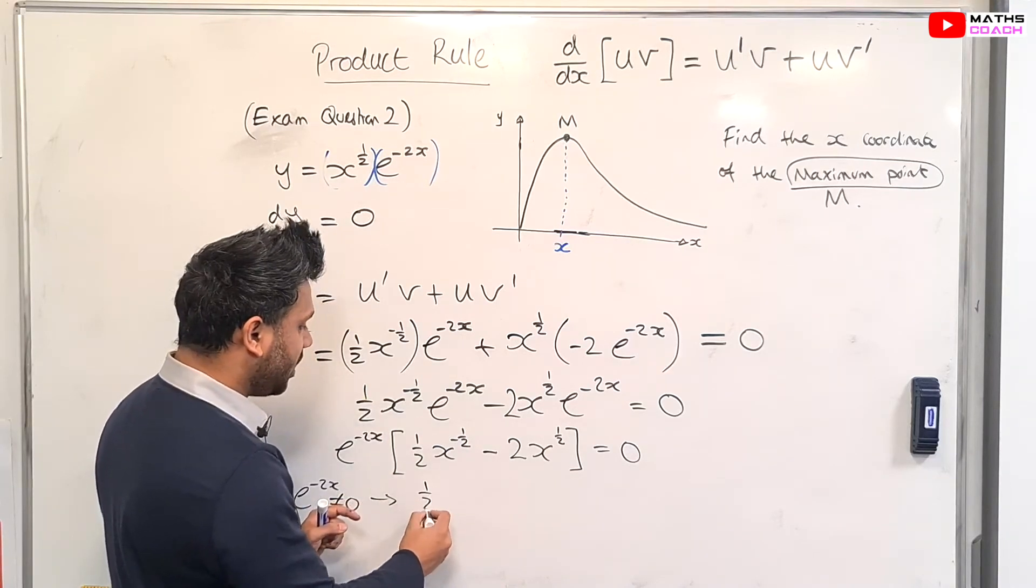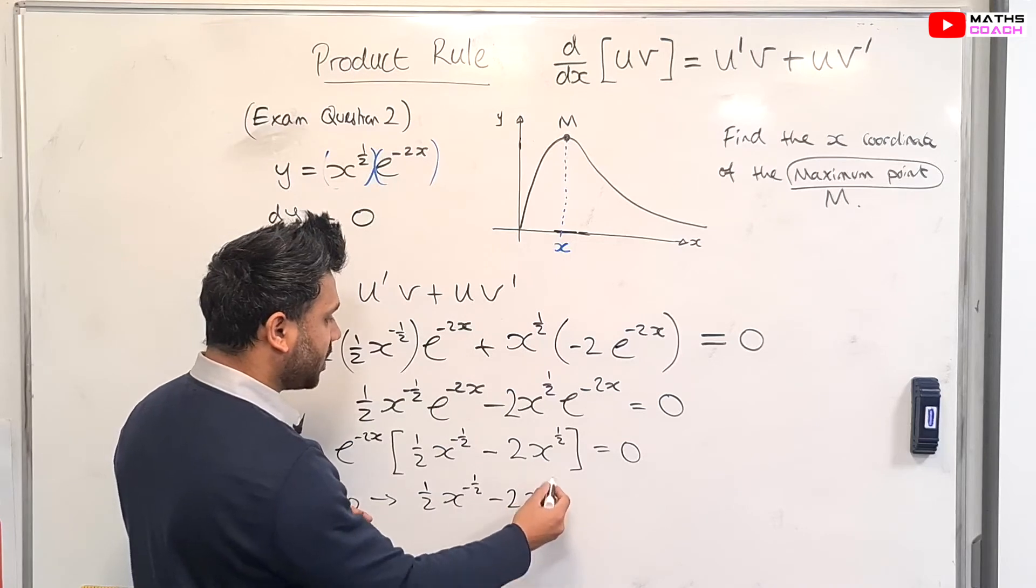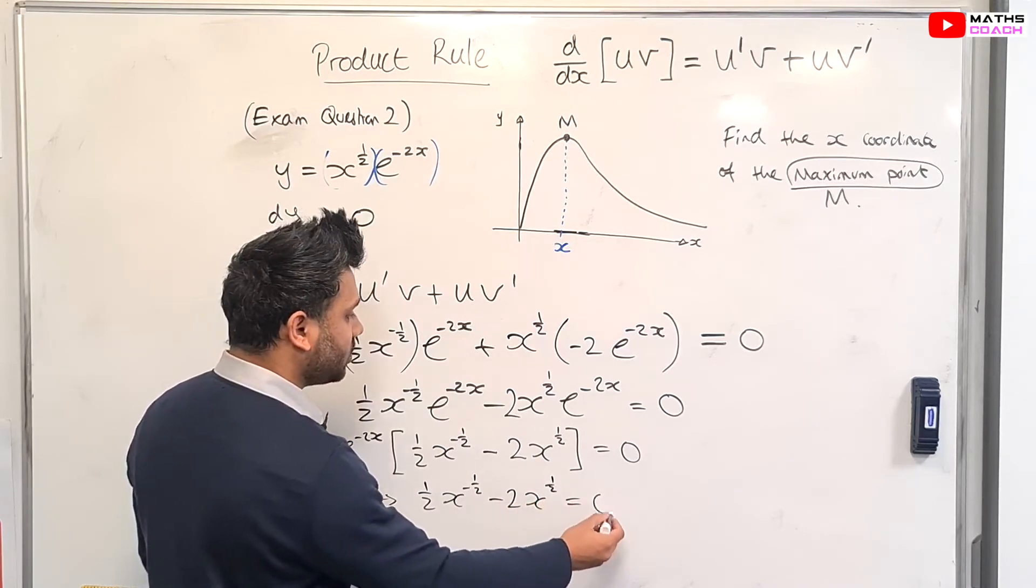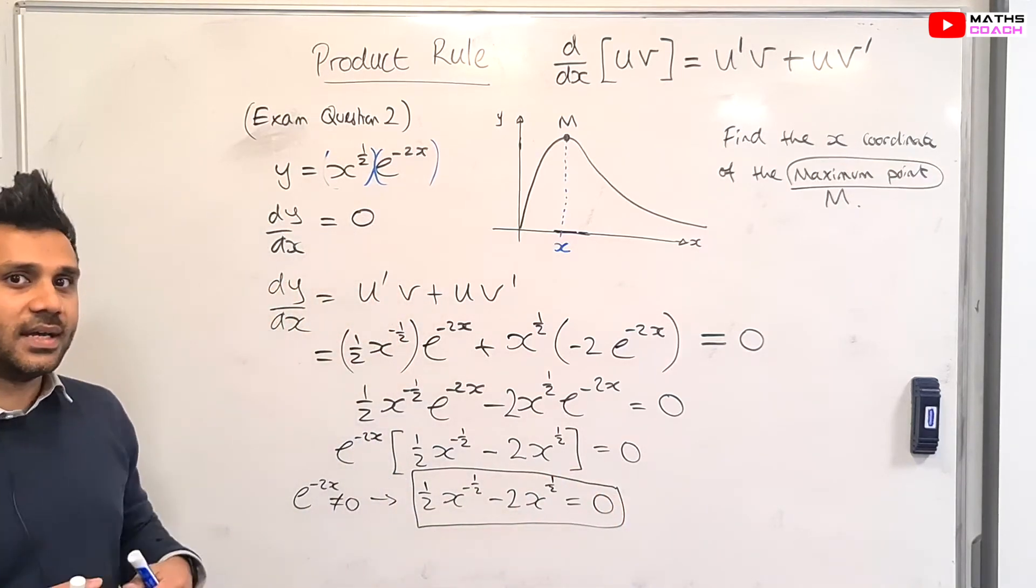So the only way this will be zero is if everything in the bracket is equal to zero. So this implies that a half x to the power of minus a half minus 2x to the power of a half must be equal to zero. So we need to be solving this equation in order to find our x value.